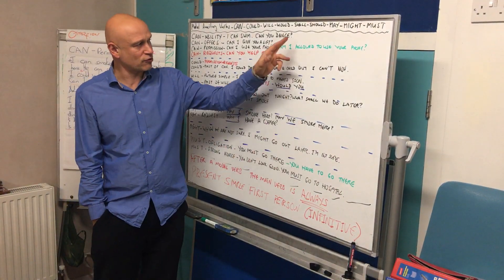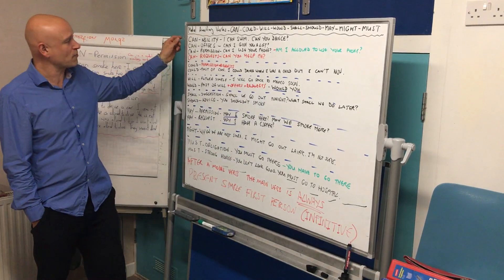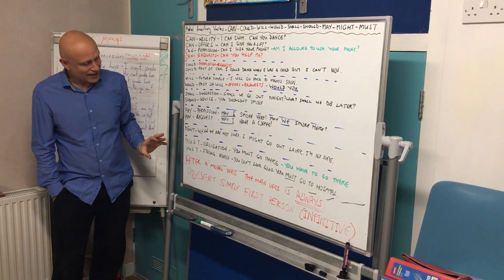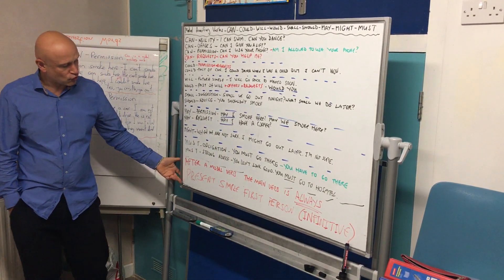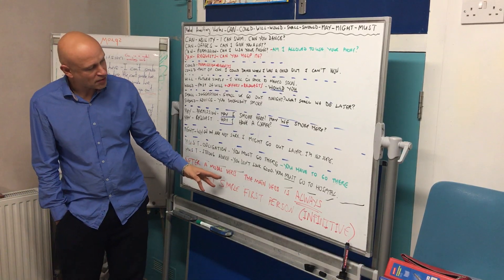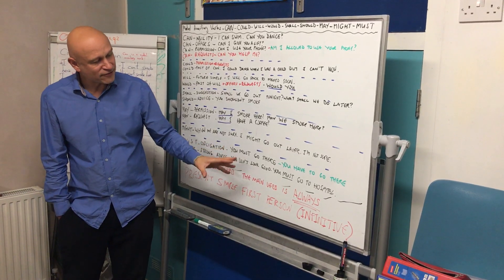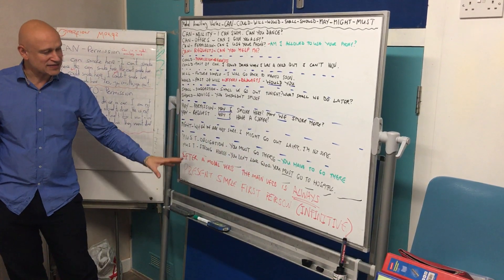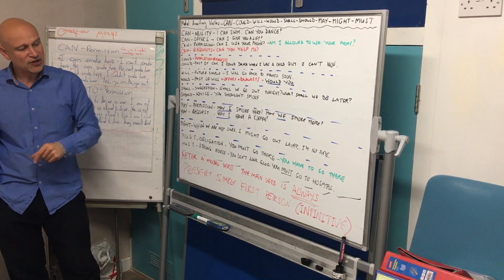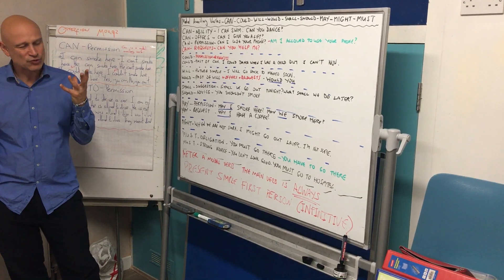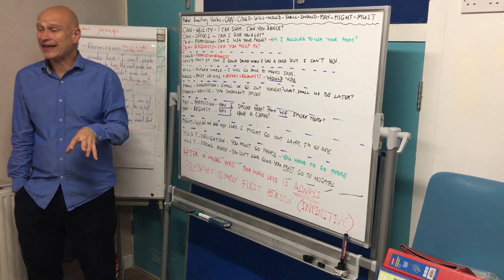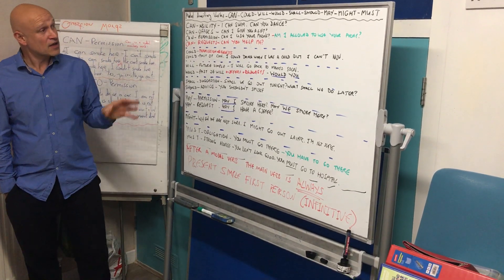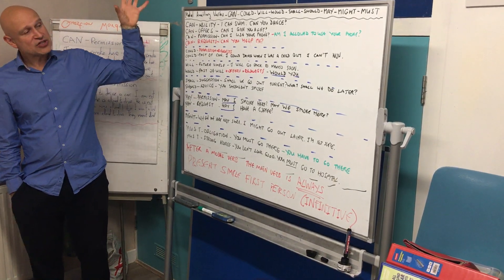Now, the important thing about the modal verbs — not 'have to' or 'allowed to', but the modal verbs themselves — here is the rule: after a modal verb, the main verb is always present simple first person. It is always infinitive.